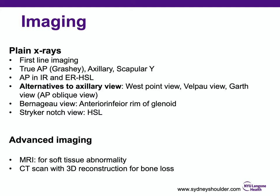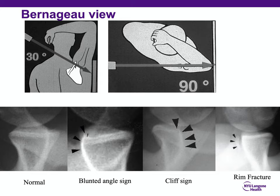For imaging, first-line is a Grashey, axillary, and scapular Y view. Alternatives to the axillary view include the West Point, Velpeau, Garth, and Bernageau view. For advanced imaging, MRI is used if predominantly soft tissue abnormalities are suspected, and CT scan with 3D reconstruction is used for addressing bone loss. The Bernageau view focuses on the anterior glenoid rim — similar to an axillary view without acromion superimposition. Glenoid rim erosion gives a blunted angle sign; significant bone loss produces a cliff sign. It is typically used for recurrent instability, not acute dislocations.